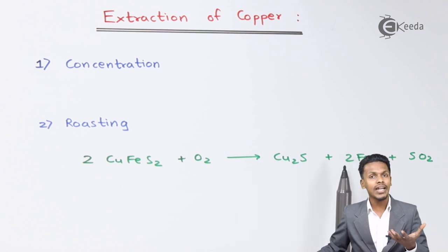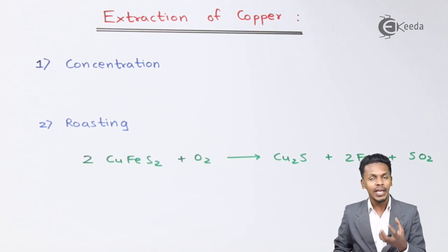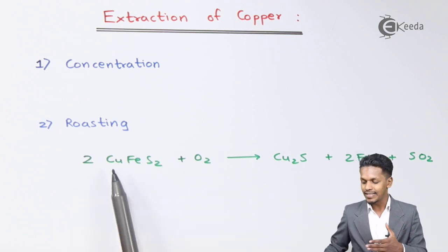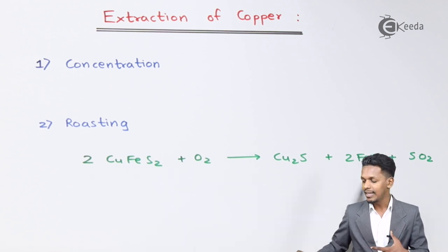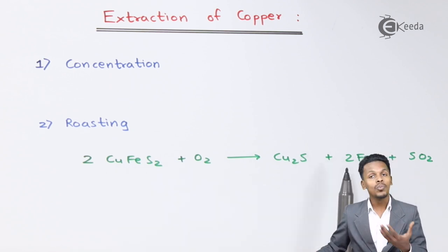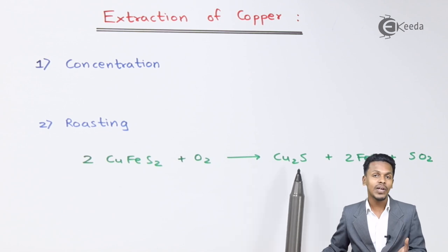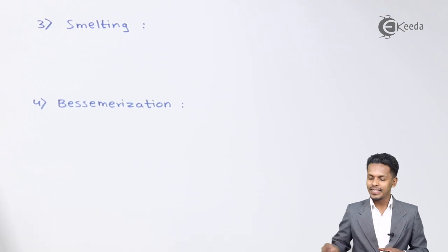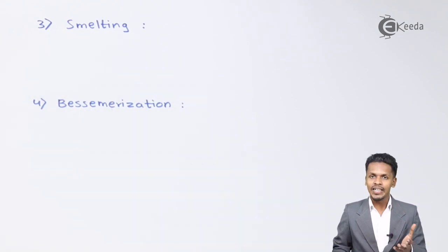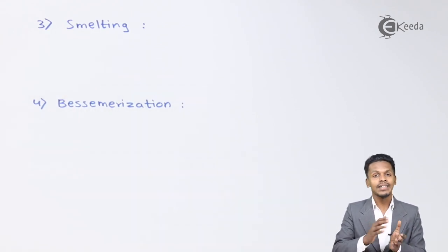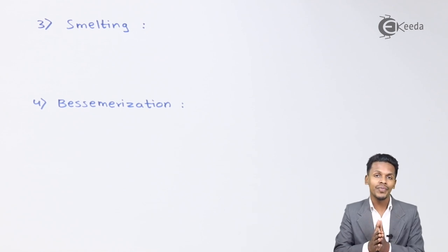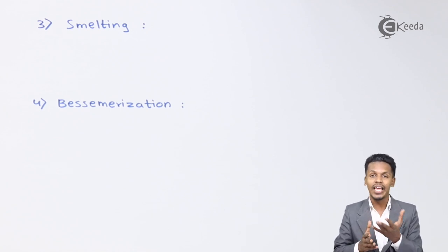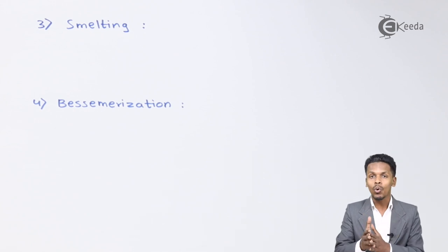We don't require iron, so we must remove the iron sulphide from the mixture that formed when we oxidised CuFeS2. We need to remove the 2 moles of FeS and convert the Cu2S to copper. The next step is smelting. The roasted ore — Cu2S and FeS — is taken into a blast furnace where the reaction proceeds.